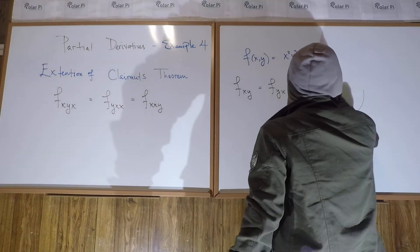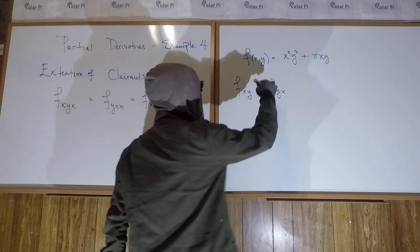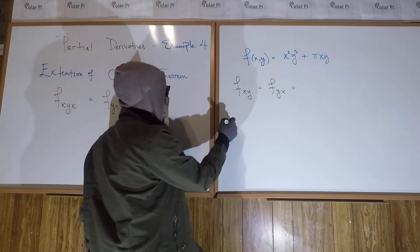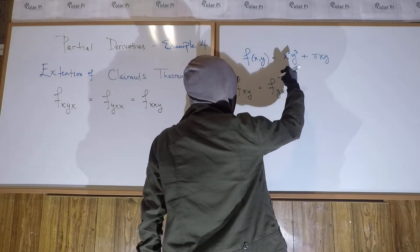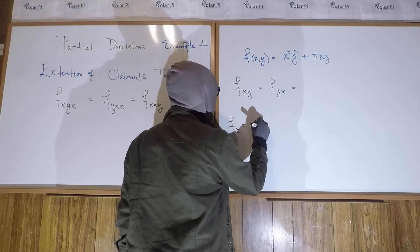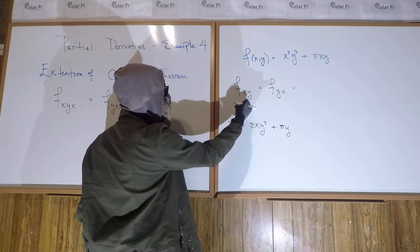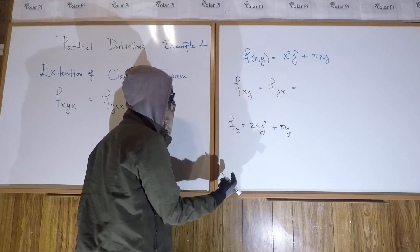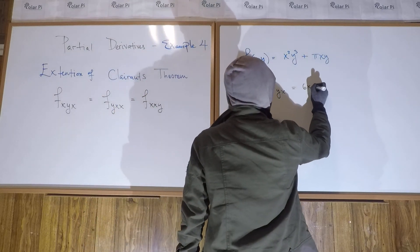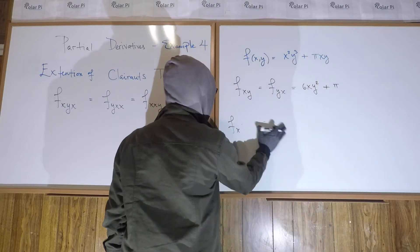So, we already calculated both of these mixed partials in the last example and showed that they're equal on this specific function, right? Now, what we said is that, say, Fx, if we do it quickly, is a partial with respect to x. So, let's treat y and anything else as constant. So, that's going to be 2xy cubed plus πy, right? And so, then, Fxy, which is going to equal Fyx, is going to be, take the partial with respect to y of this, and so that's going to be 6xy squared and then plus π, right?